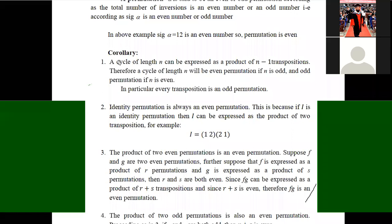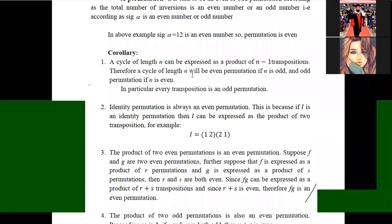First result: a cycle of length n can be expressed as a product of n minus 1 transpositions. Therefore, a cycle of length n will be an even permutation if n is odd, and an odd permutation if n is even. For example, if n is 5 (odd), the number of transpositions is 4, which is even, so the permutation is even. If n is 4 (even), the number of transpositions is 3, so the permutation is odd.